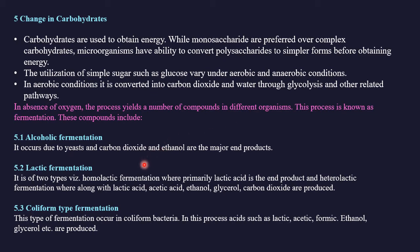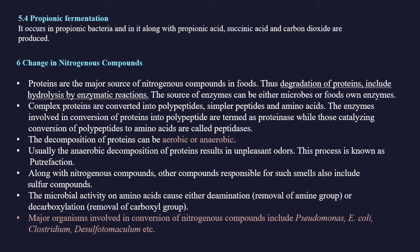Types of fermentation include: alcoholic fermentation — occurs due to yeast, producing carbon dioxide and ethanol; lactic acid fermentation — homolactic type produces primarily lactic acid, while heterolactic type also produces acetic acid, ethanol, glycerol, and carbon dioxide; coliform fermentation — occurs in coliform bacteria producing lactic, acetic, and formic acids, plus ethanol and glycerol; and propionic fermentation — occurs in propionic bacteria producing propionic acid, succinic acid, and carbon dioxide.